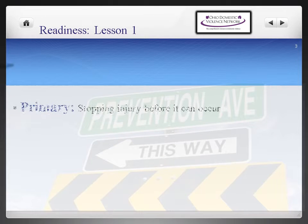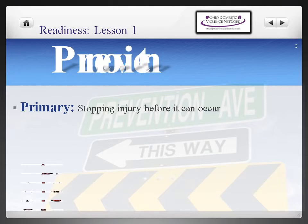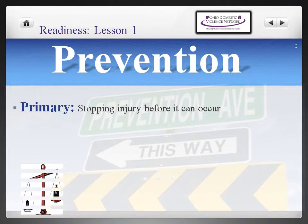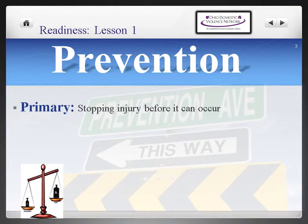By looking at the definition, primary prevention looks fairly straightforward — that is, stopping injury, or in our case relationship and sexual violence, before it occurs. While this definition is accurate, it does not take into consideration that engaging in primary prevention is a systematic process that promotes healthy environments and reduces the likelihood or frequency of an incident, injury, or condition from occurring. Primary prevention is more than implementing a curriculum; hence the systematic process.